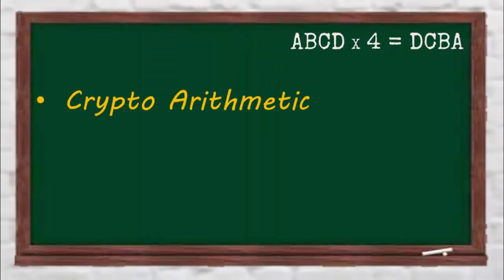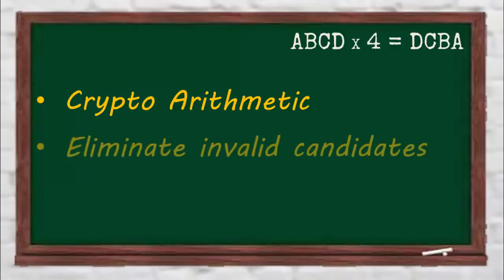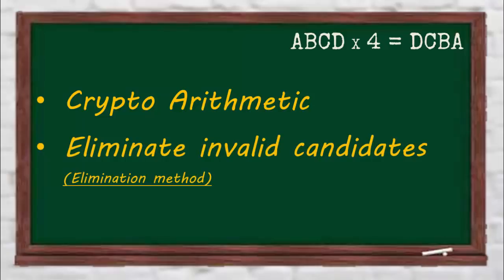It's called a cryptarithmetic problem. And to solve this, you need to work with various combinations of numbers. All you have to do is eliminate all the invalid candidates one by one, systematically.